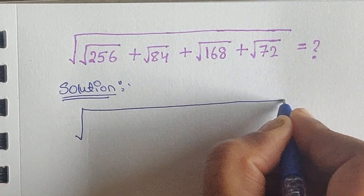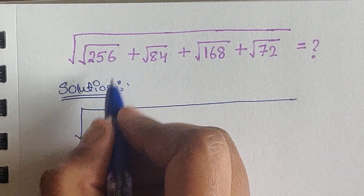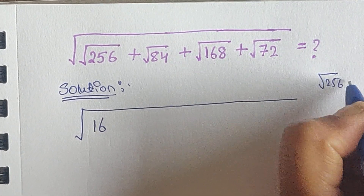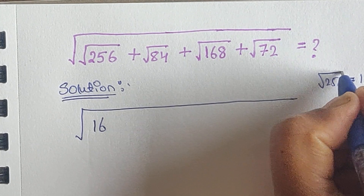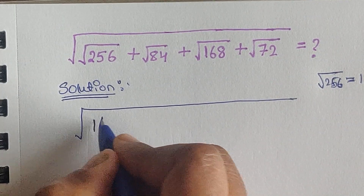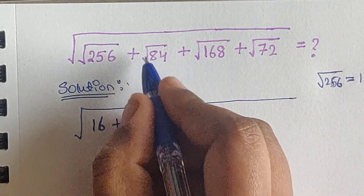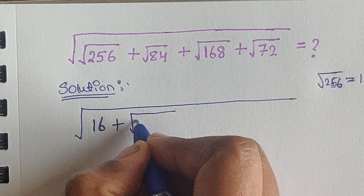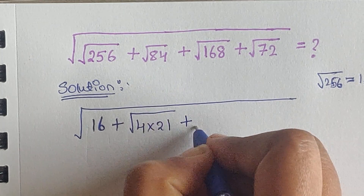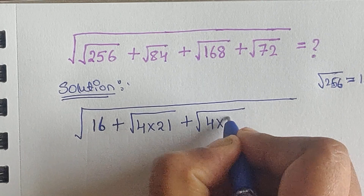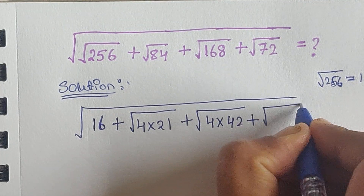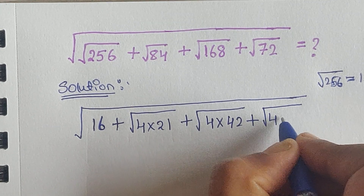Square root of 256 is equal to 16, so we can write it directly. Then square root of 84 we can write as square root of 4 times 21, plus square root of 168 as square root of 4 times 42, plus square root of 72 as square root of 4 times 18.